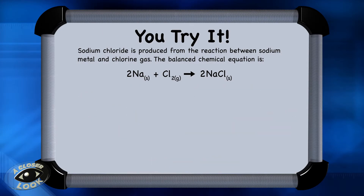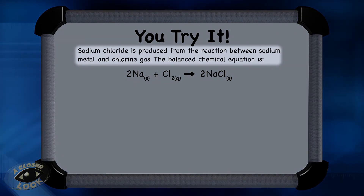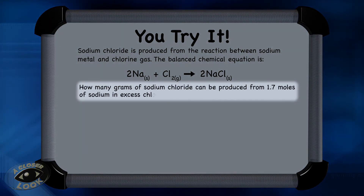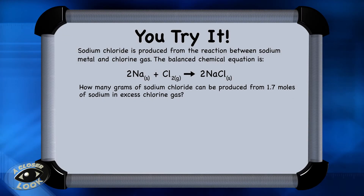Here's a problem for you to try on your own. Sodium chloride is produced from the reaction between sodium metal and chlorine gas — you can see the balanced chemical equation. How many grams of sodium chloride can be produced from 1.7 moles of sodium in excess chlorine gas? Press pause and give it a try, then press play and check your work.